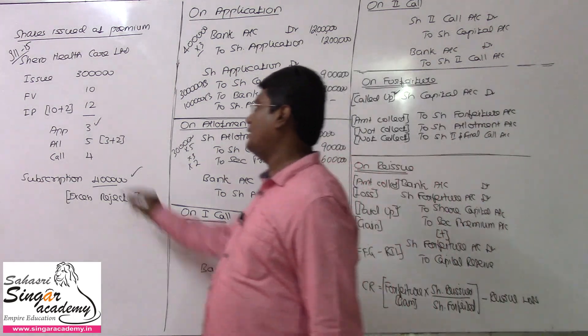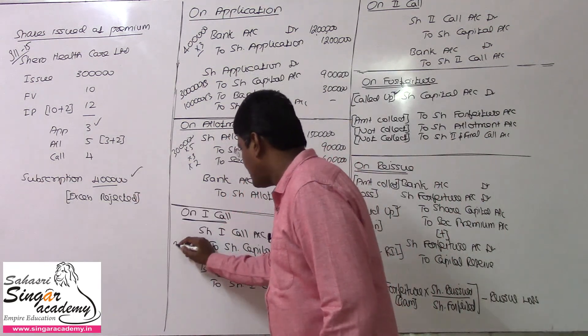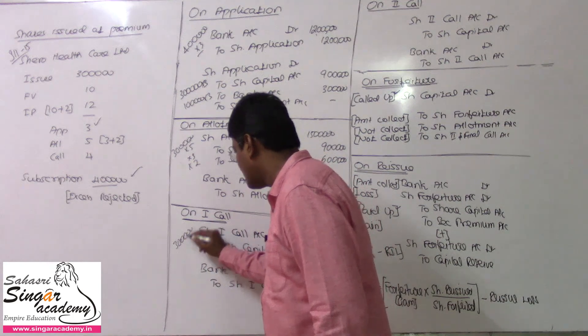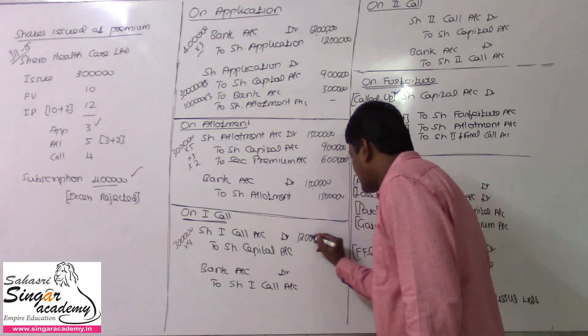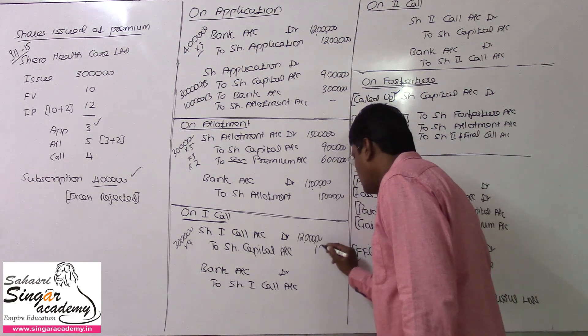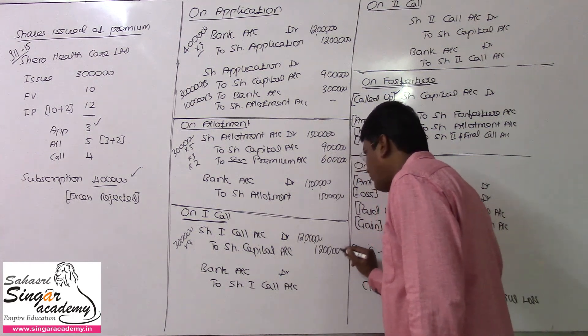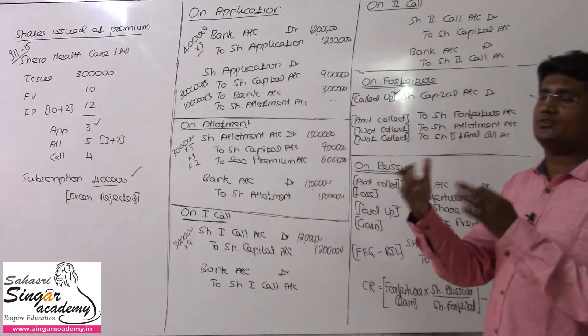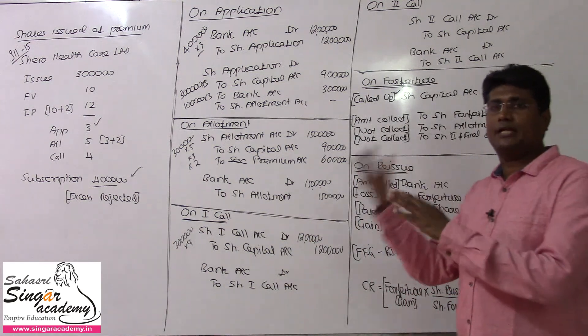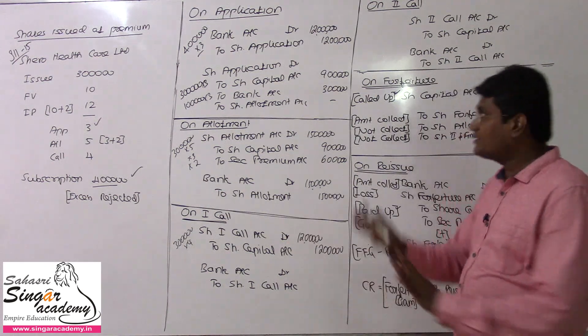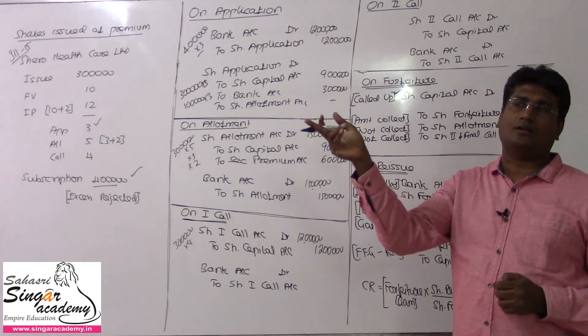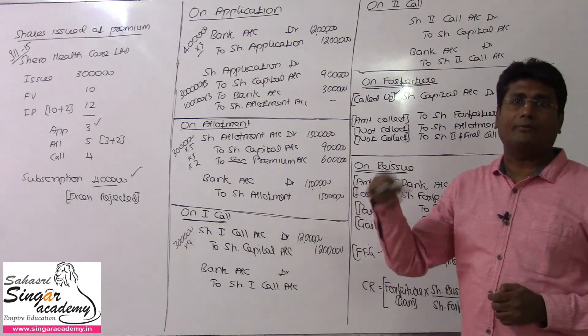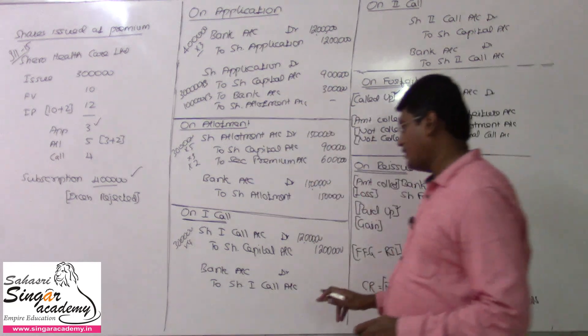Last call - subsequent call is 4 rupees. 3 lakhs shares, one share is 4 rupees, multiply by 4, so 12 lakhs will come here. This is the due entry for call. Share first and final call account debit to share capital. Whether first call or second call, the skeleton pattern is the same. Share first and final call account debit to share capital, then bank account debit to share first and final call account.